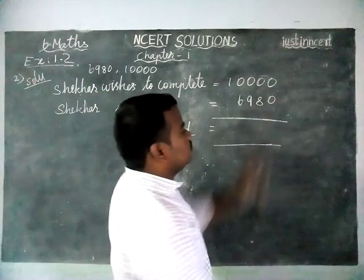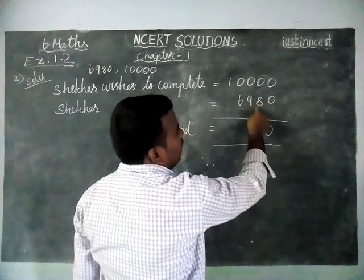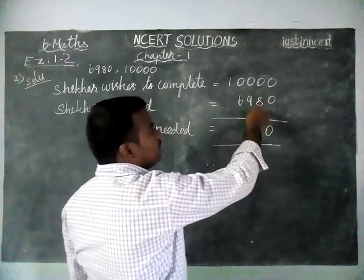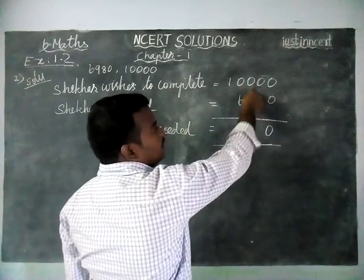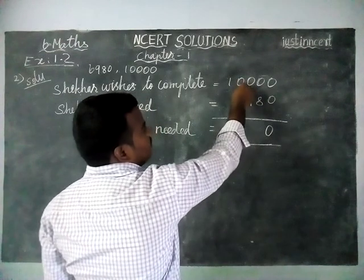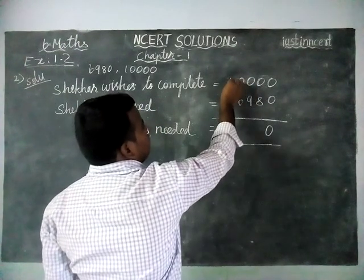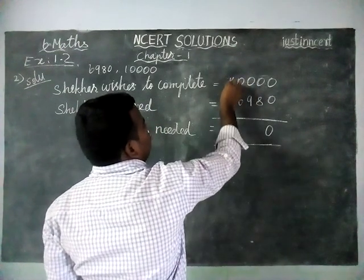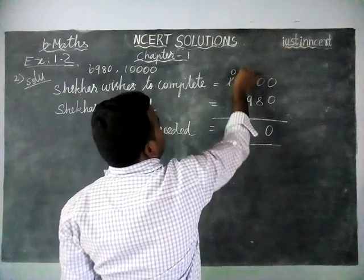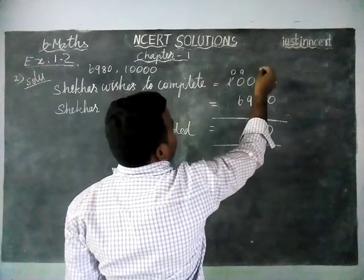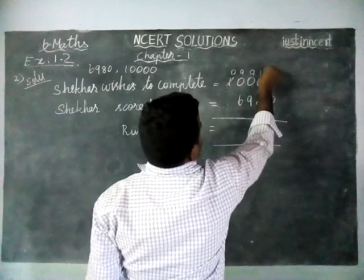0 minus 0, no problem, we have 0. Next, 0 minus 8 — we cannot subtract. So we have to borrow from a nearby number. The nearby number is also 0, so we are borrowing from this 1. Now this becomes 0, and from this we have kept 9. Here also we kept 9. Now this becomes 10.